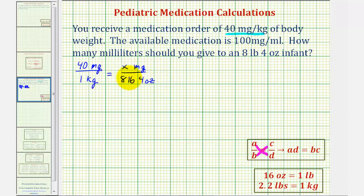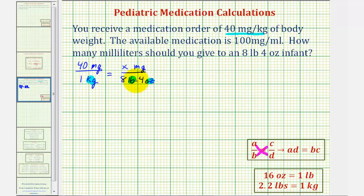Notice in this case, we cannot cross multiply and solve for X because we do not have the same unit on the bottom. Here we have kilograms, and here we have pounds and ounces. So we'll first have to get a common unit here.